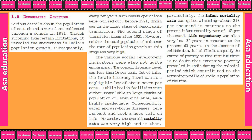Life expectancy was also very low — 32 years, in contrast to the present 60 years. In the absence of reliable data, it is difficult to specify the extent of poverty at that time. But there is no doubt that extensive poverty prevailed in India during the colonial period, which contributed to the worsening population profile.